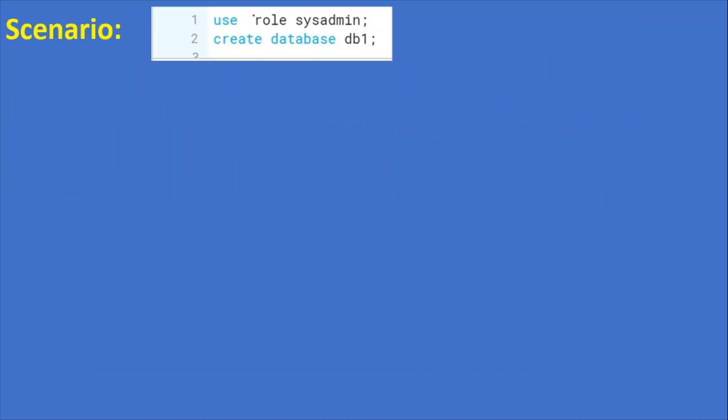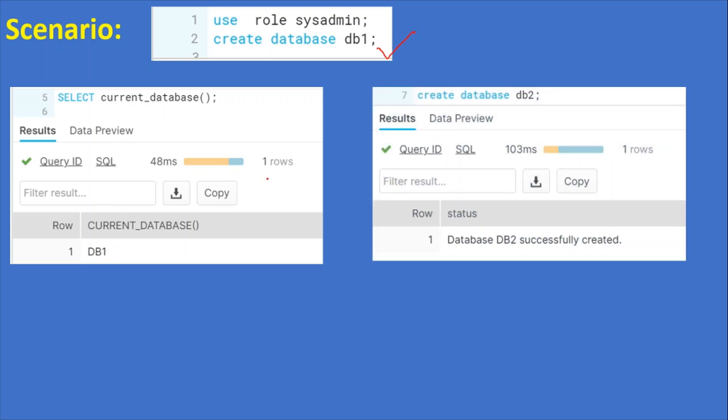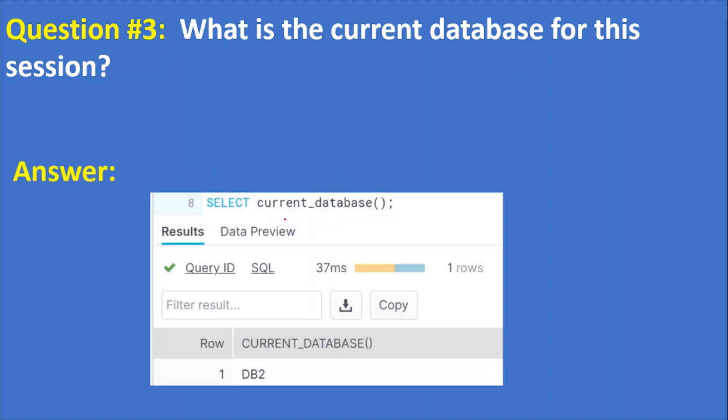Next scenario: use role sysadmin, create database db1. Now the current database is db1. After that in the same session, create database db2. Database db2 successfully created. Now question: what is the current database for this session? The answer is: select current_database returns db2. Please note that in the screens whatever I have shown here, we didn't set the database. However, the moment when you create any database from any session, even though if you don't set the database, whatever you have created most recently, that database would be your current database.